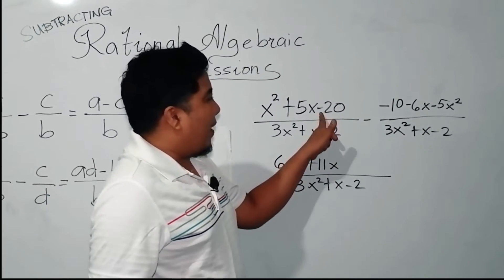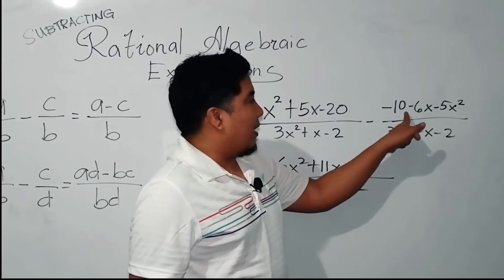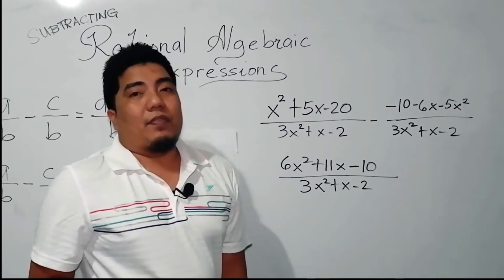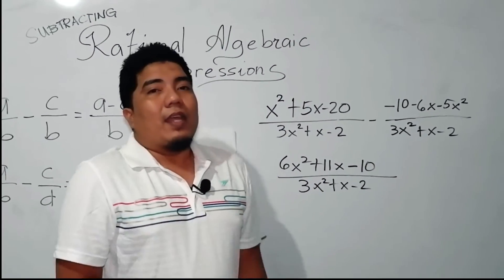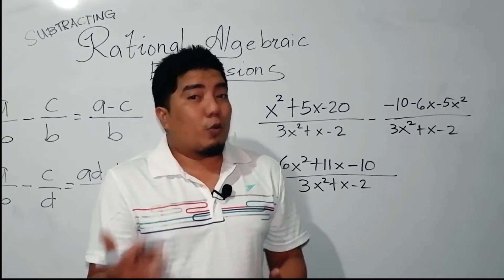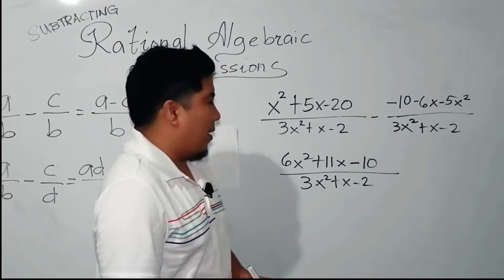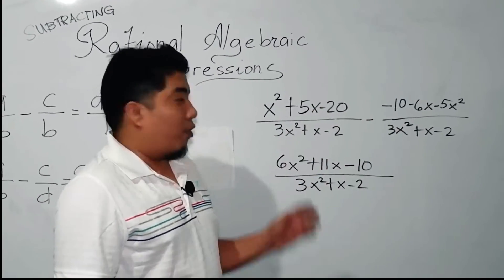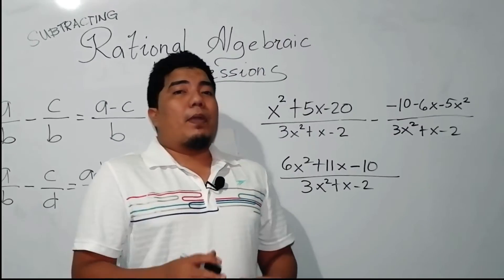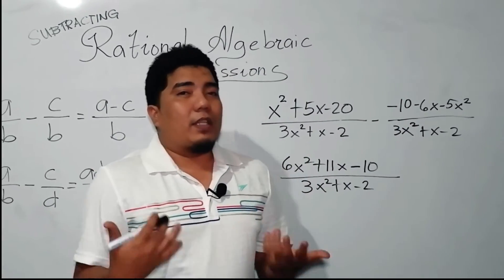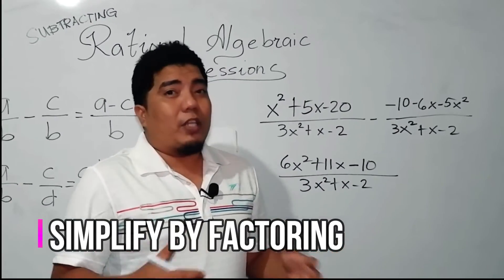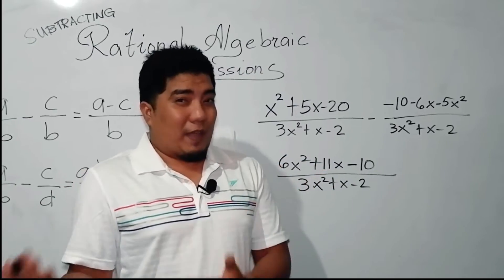Finally, we have negative 20 minus negative 10. Negative 20 minus negative 10 gives negative 10, because negative 20 minus negative 10 will give you negative 20 plus 10, applying the rules in subtracting integers. So we have our simplified numerator and denominator. These are trinomials — remember that if you have an answer as a trinomial, try to factor out or simplify its factored terms, whether you have a way to cancel each factor.